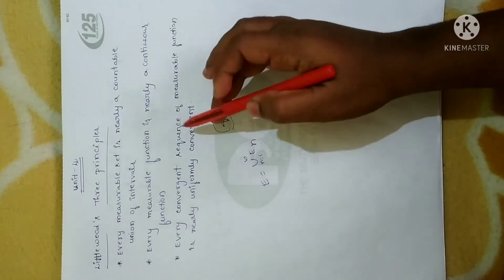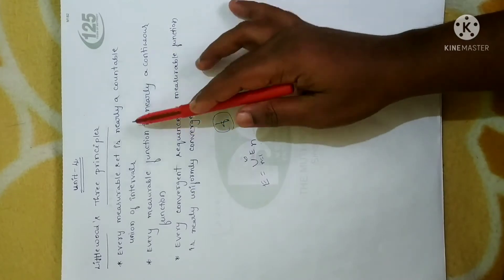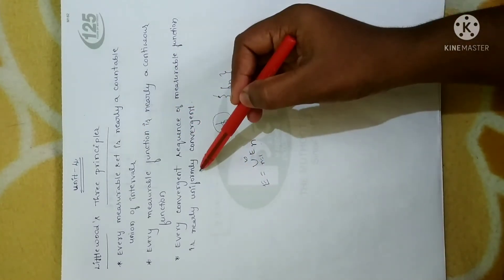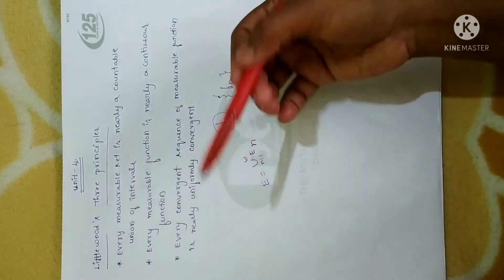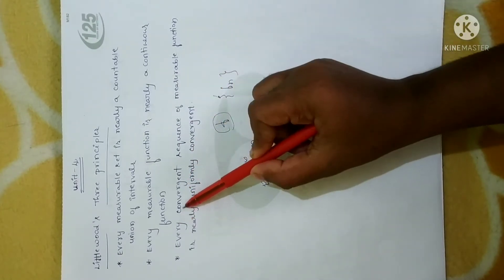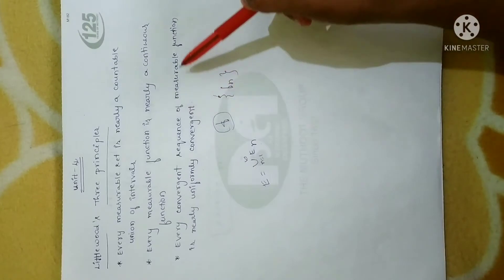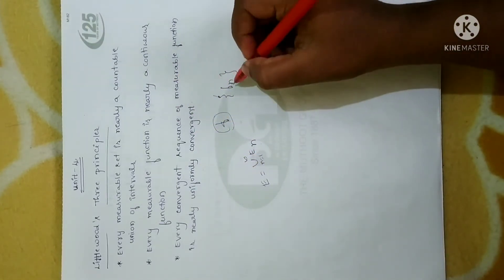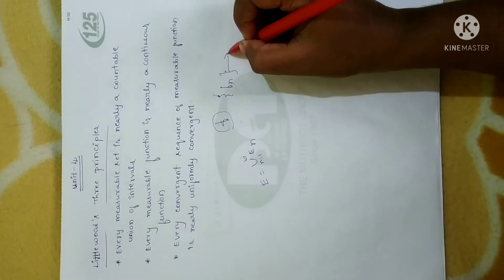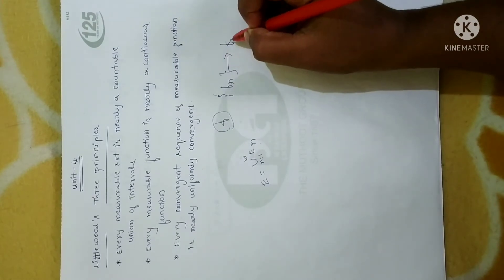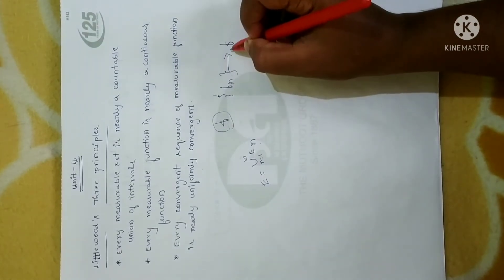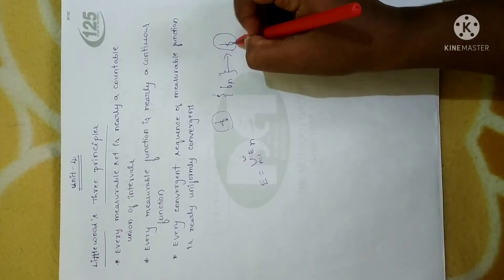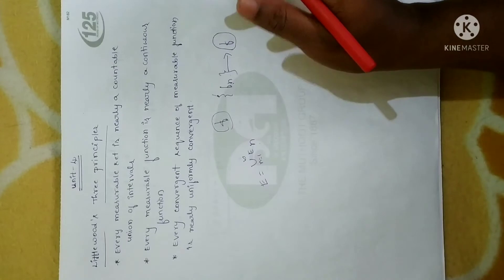We say these three are Littlewood's three principles and they hold true for almost all sequences and functions as per the statement. The third one: every convergent sequence of measurable functions is nearly uniformly convergent. In the sense, if Fn is a sequence converging to a certain function, then that function will be measurable and moreover it is uniformly convergent.